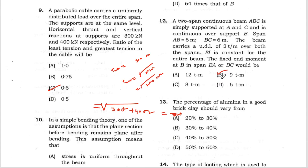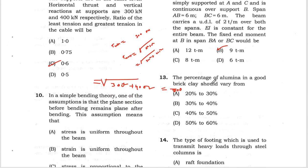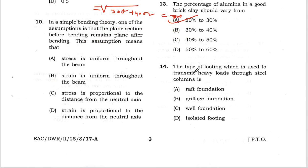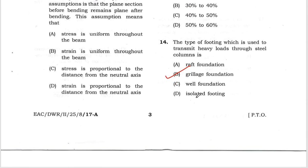Question 13: The percentage of alumina in good brick clay is 20 to 30 percent. Question 14: The type of footing used to transmit heavy loads through steel columns is grillage foundation. Option B is correct.